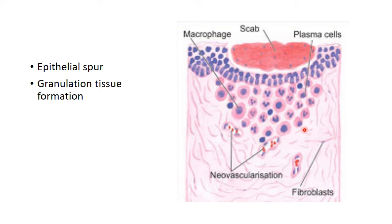The sequential events in the formation of granulation tissue were already discussed in our previous episode. Initially angiogenesis occurs — that is, formation of new blood vessels or neovascularization — followed by deposition of collagen fibers, that is fibrogenesis. This deposition of collagen fibers continues so that proportionately the amount of collagen increases while vascular and cellular elements proportionately reduce.